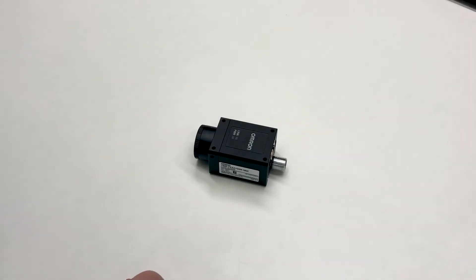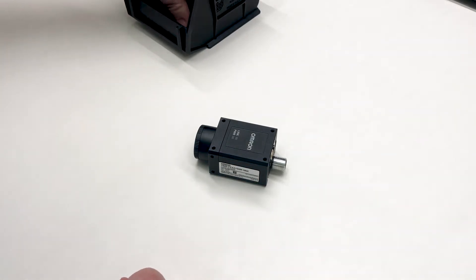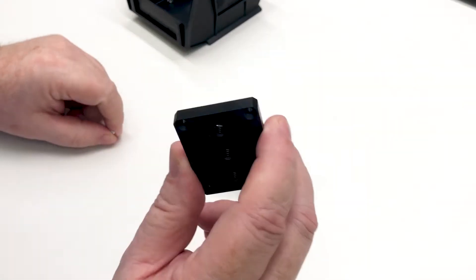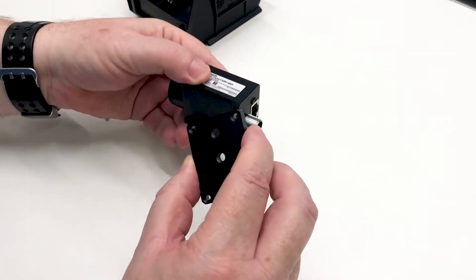This is the V440 code reader. If you want to mount the 440 using 1.25 screws, install the option mounting bracket, V440AM0.